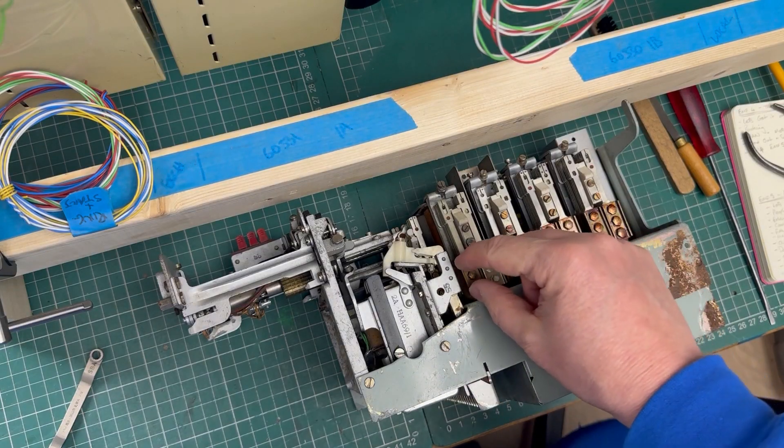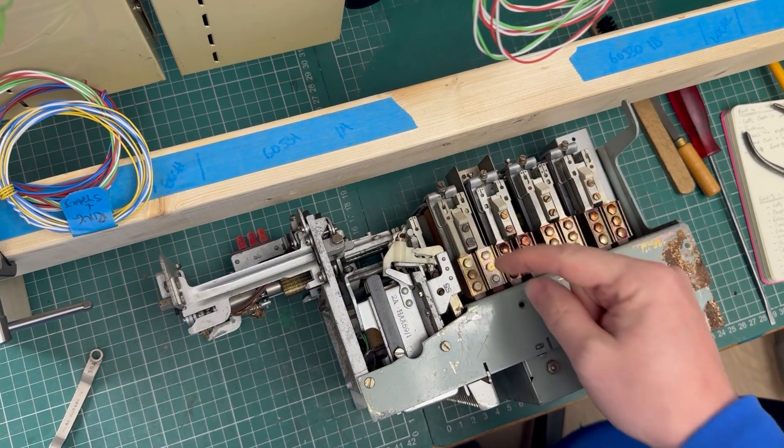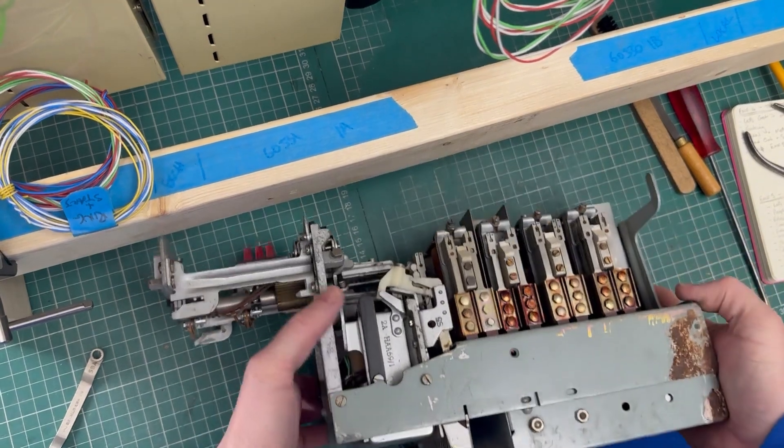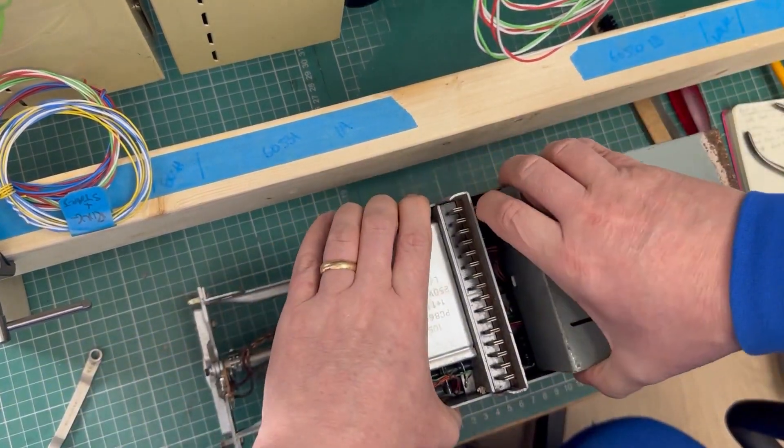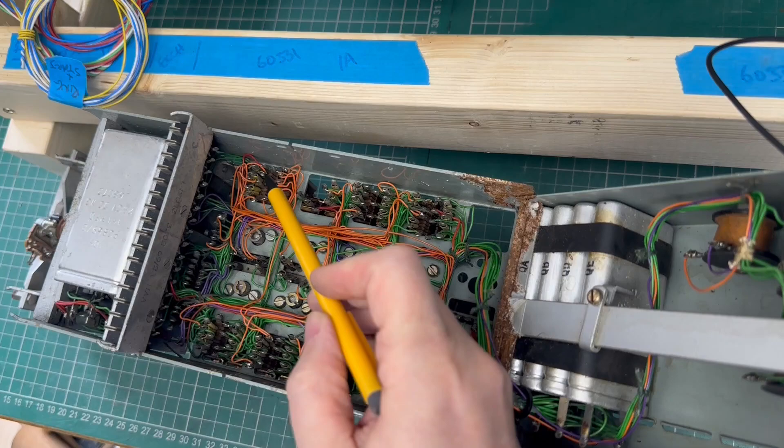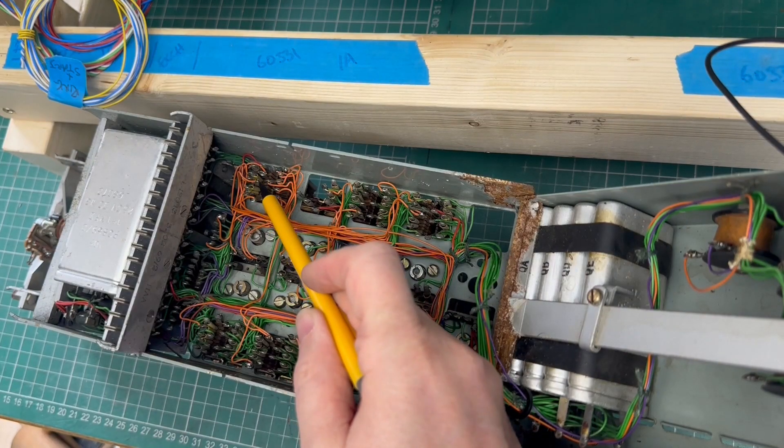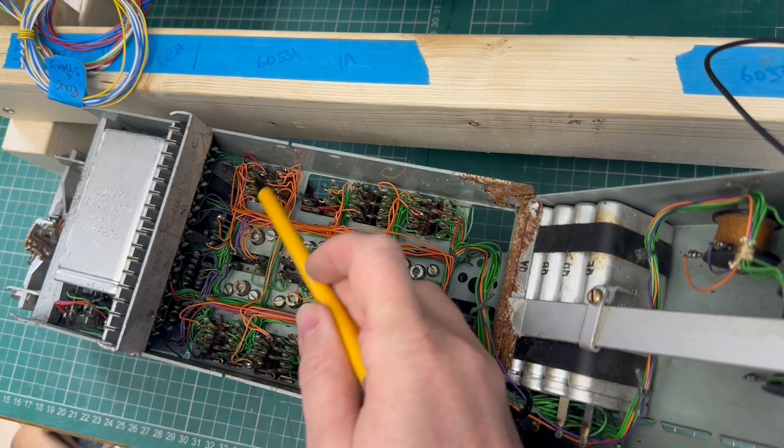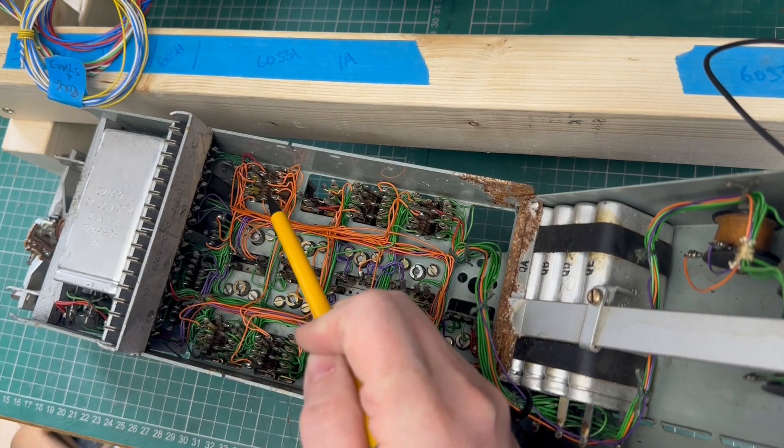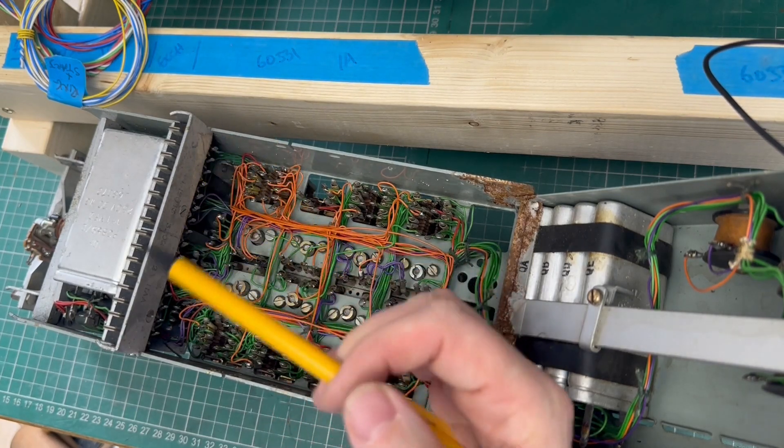I can take the contacts off by undoing these two bolts here. But the real trouble is inside the back. So there are nine contacts here that I have to desolder. And all the wires are the same colour. So I'm going to have to be very careful to label these so that I know where they go.